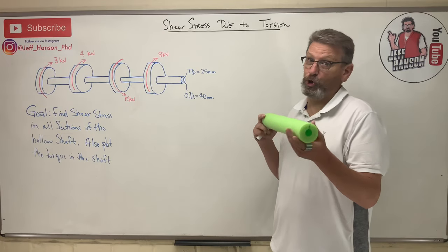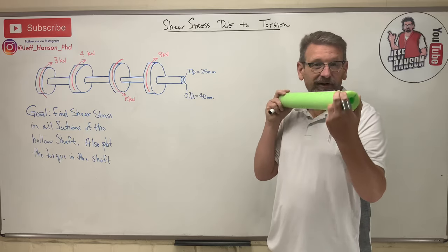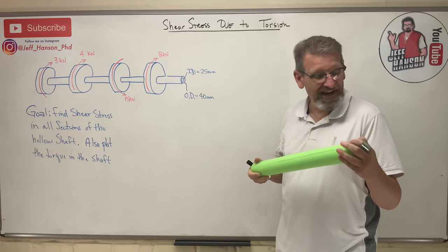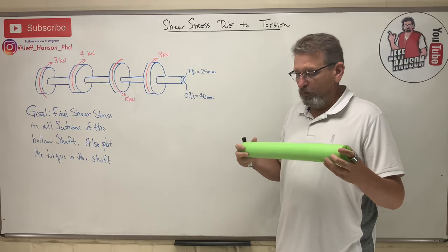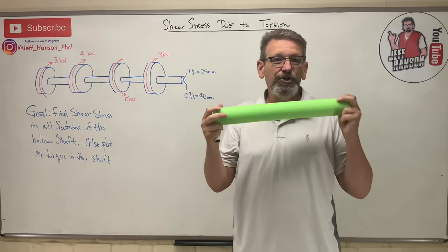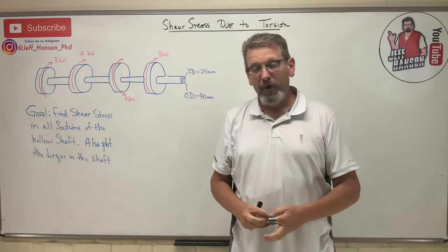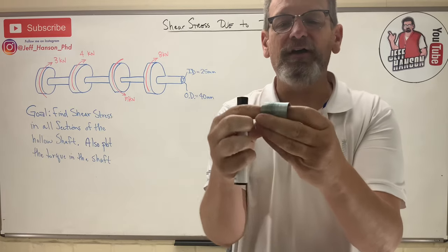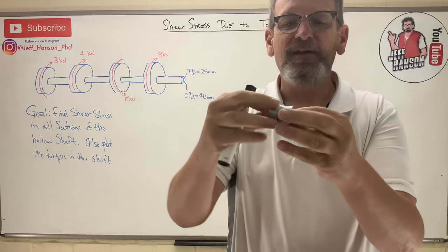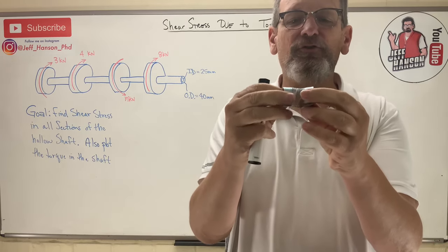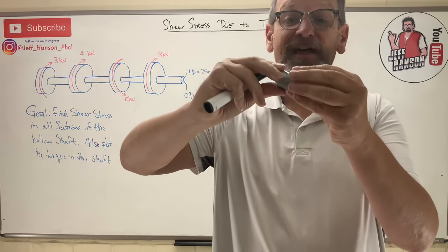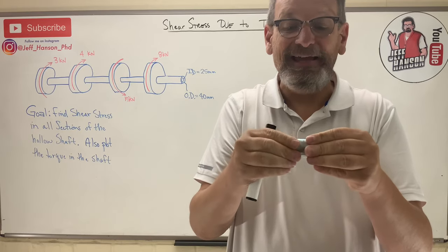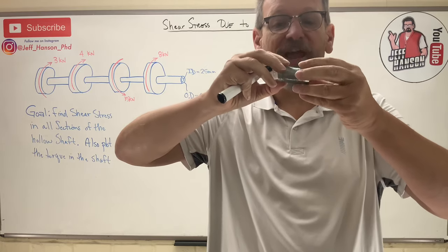Welcome back. Today we're going to talk about torsion — torque on a shaft. If you have a shaft and you start putting torque on it, you start putting a twisting force. Remember, torque is a tendency to cause rotation. What happens inside that shaft is you start inducing shear stress. As you twist it, imagine a shaft is made up of individual layers like a slinky — those layers are sliding one relative to the next. That's shear stress, trying to shear as you twist it.